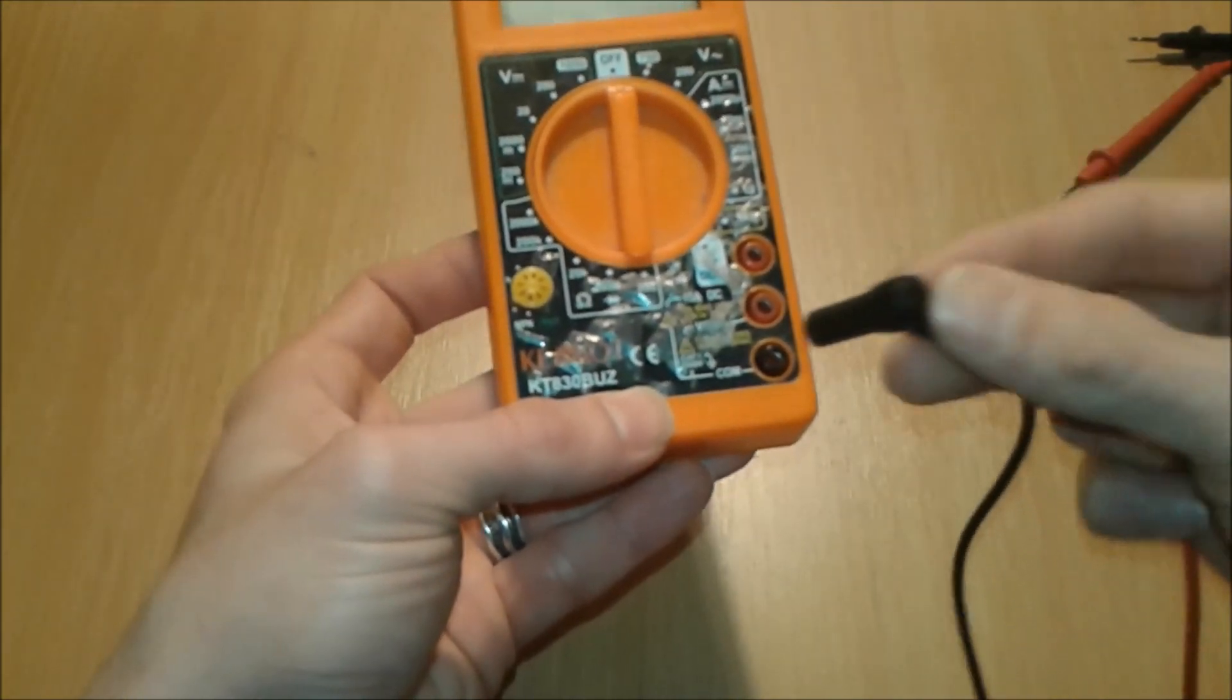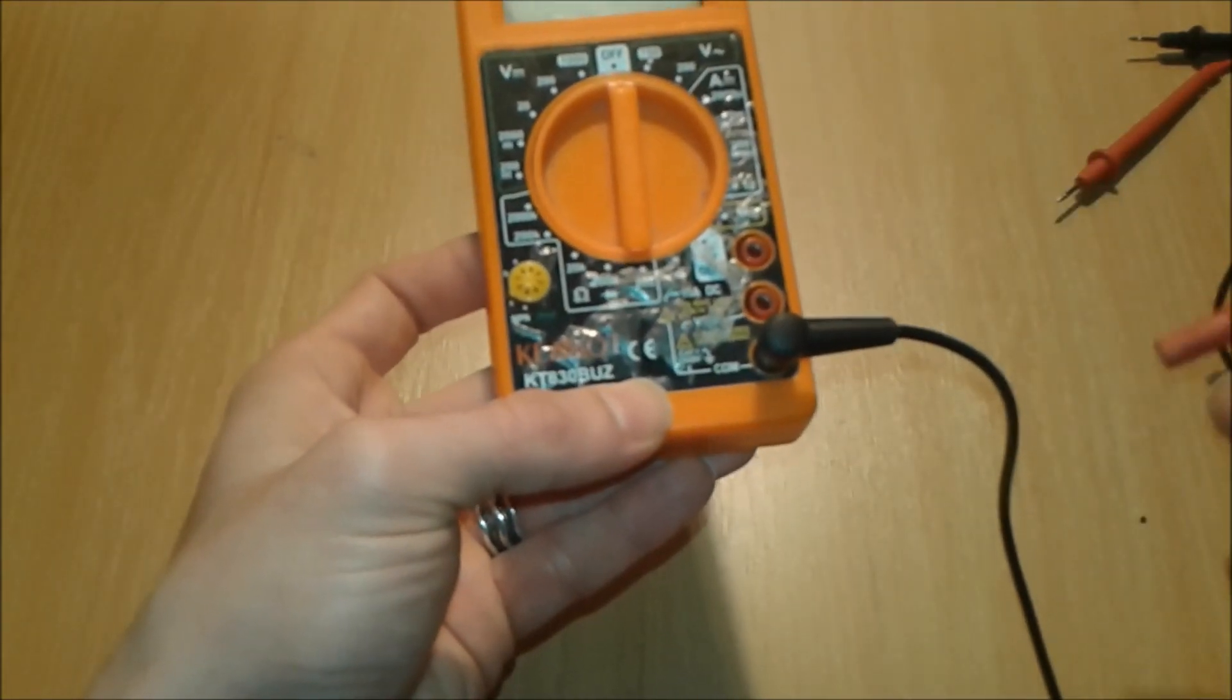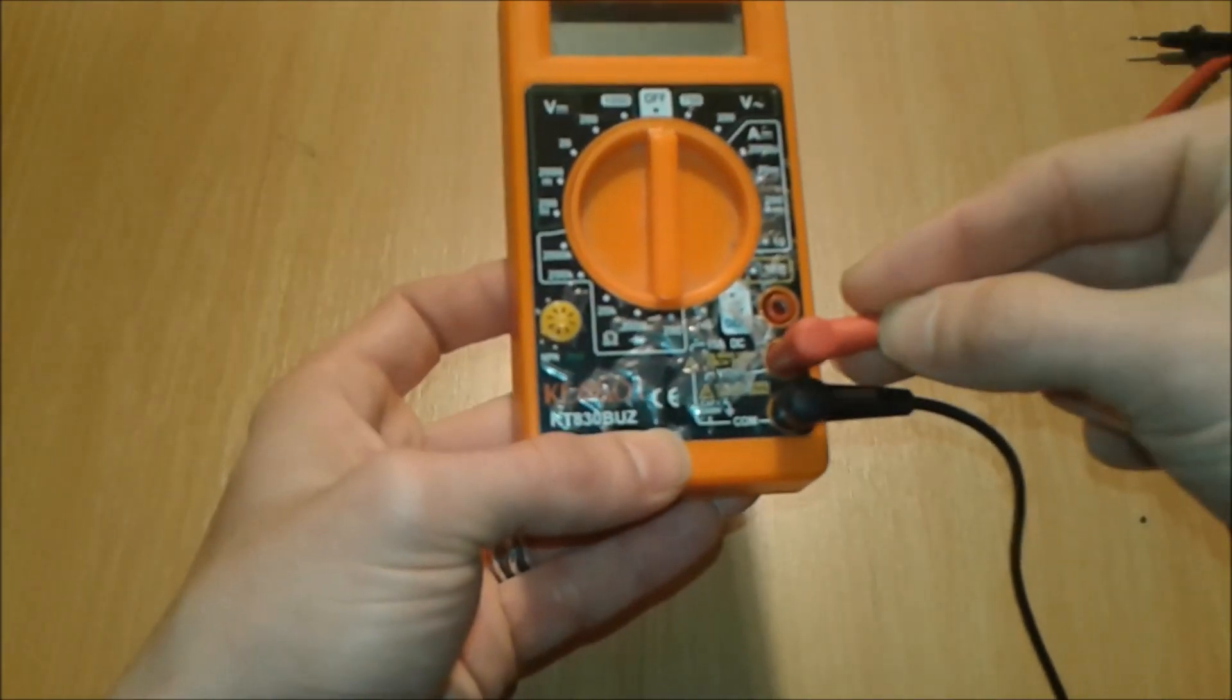We're gonna connect the multimeter accordingly to the black, meaning negative or ground, and the red one we're gonna connect here.